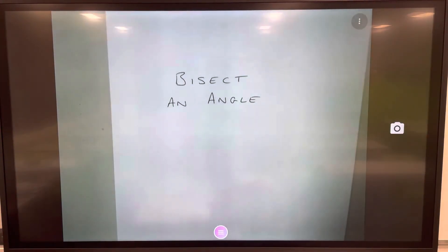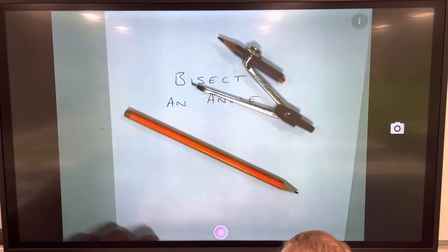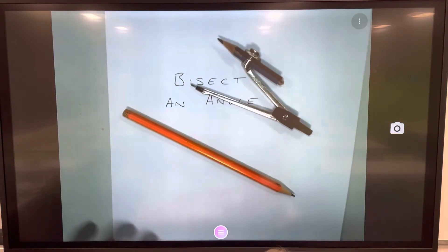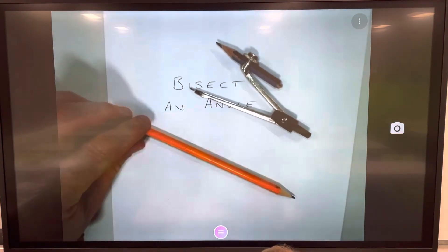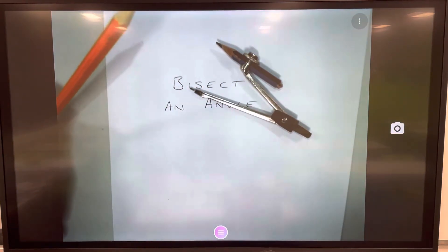To bisect an angle, we need a couple of things: a pencil, a pair of compasses with a little pencil here. You'll also notice that my pencils are sharp. That creates the accurate line that we're going to be drawing and makes things a lot easier.